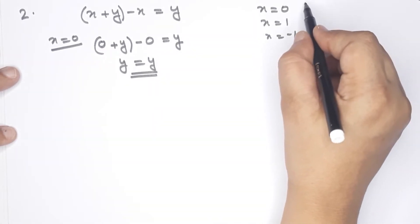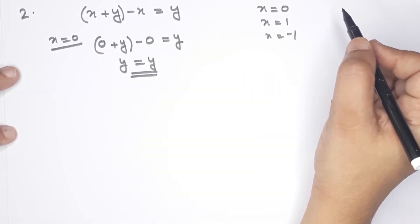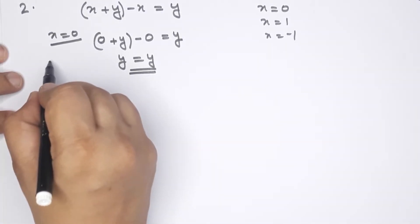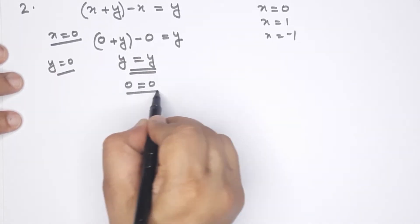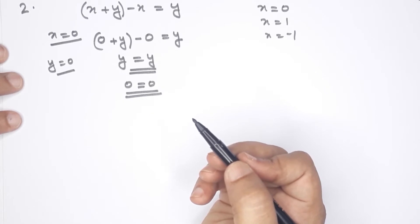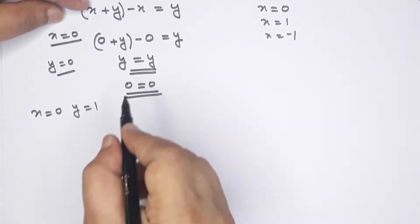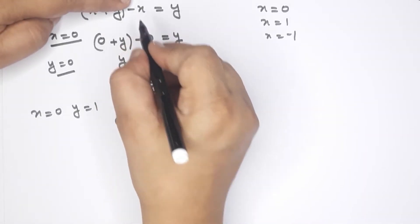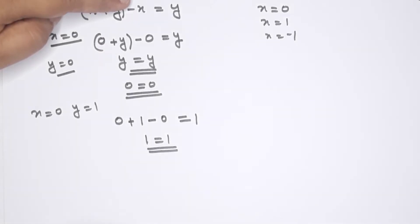Now we have different numbers here. We need to get x and y values. When x equals 0 and y equals 0, we verify the property. Then let's write x equals 0 and y equals 1. Then x plus y equals 0 plus 1, so we write x equals 0 and y equals 1.